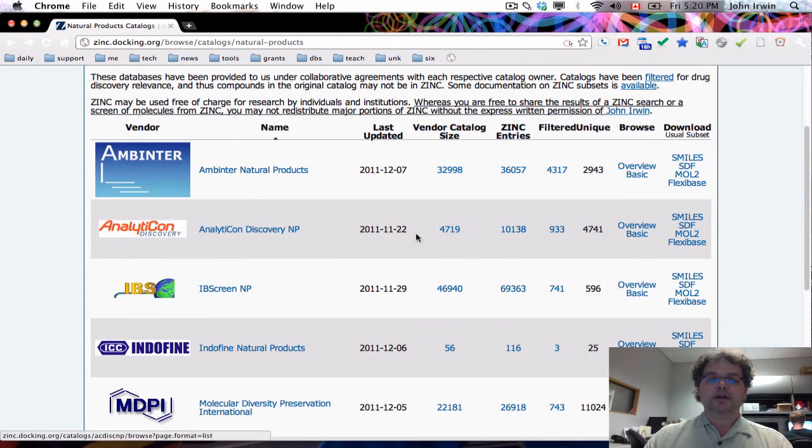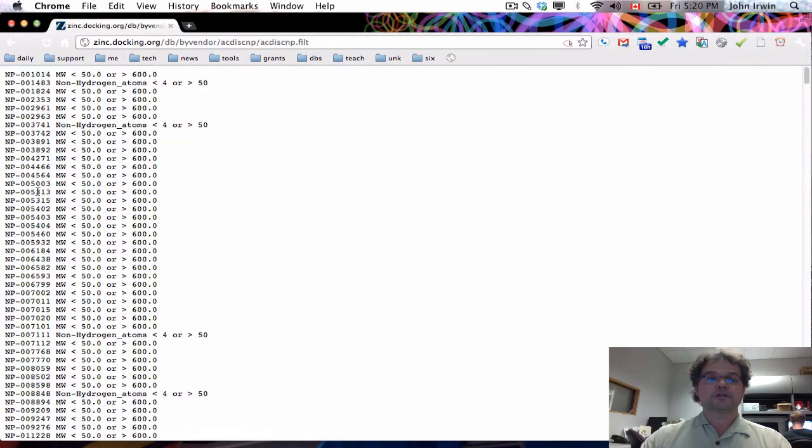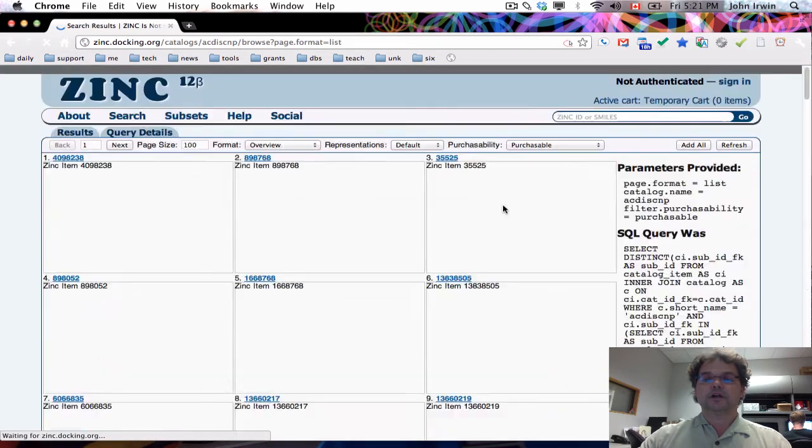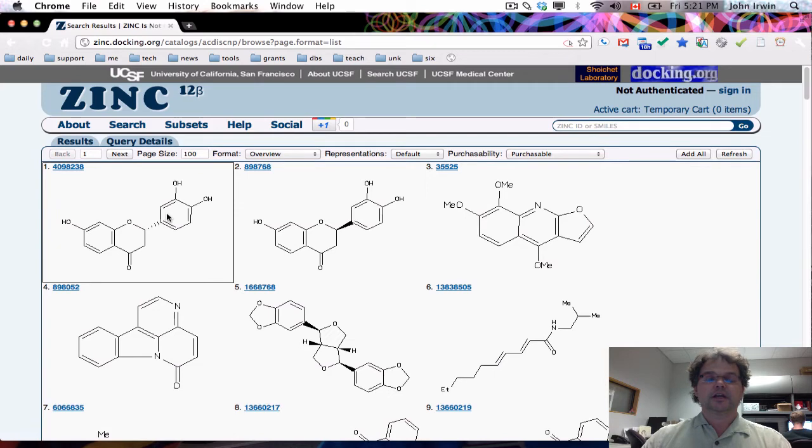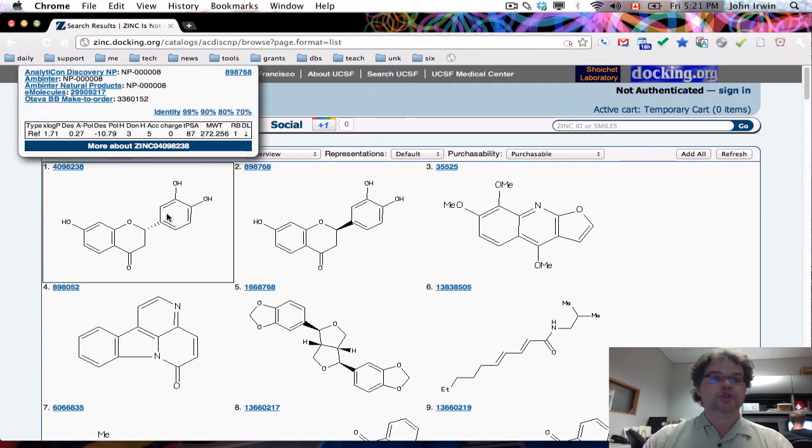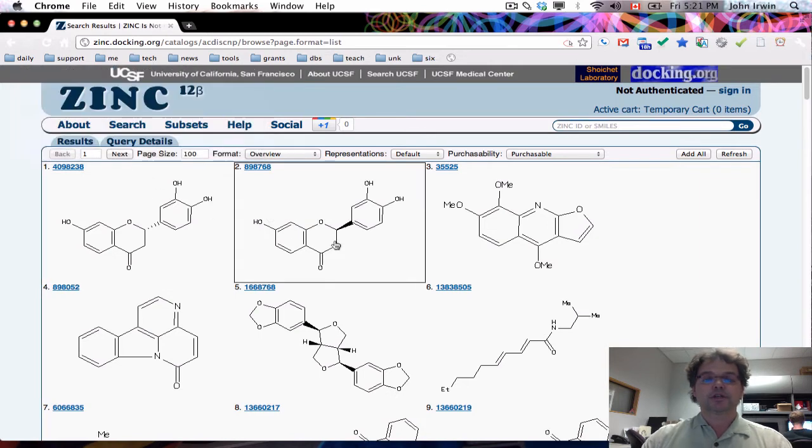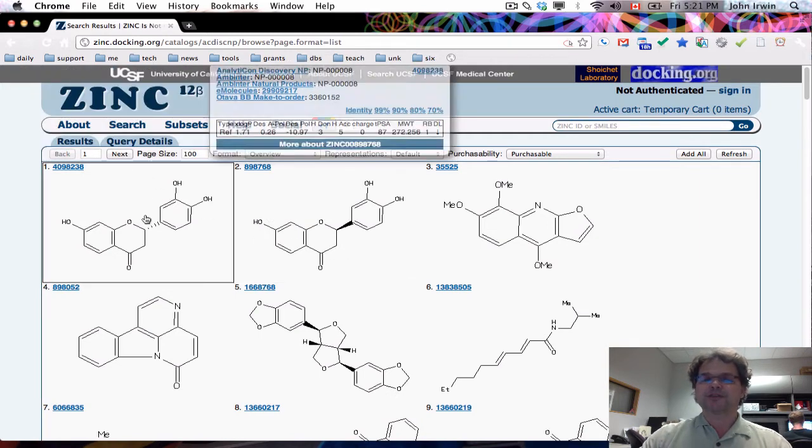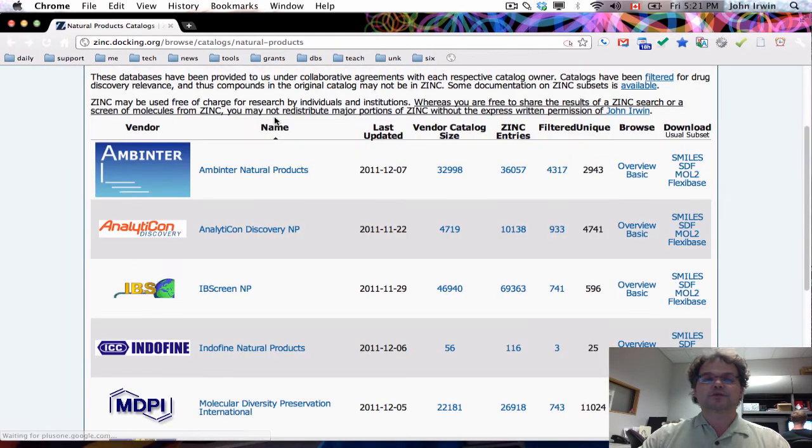The ZINC entries allow us to browse the molecules online. If you click on the number filtered, you can see molecules that were filtered out of the catalogs and why. And if you click on just an overview, it takes you in and allows you to look at the molecules just as if you'd done a ZINC search. This molecule is a natural product, and the company identifies it as such, and you can also purchase these compounds. So that's really interesting because they're natural products and they're also commercially available, and that's really what ZINC is all about.